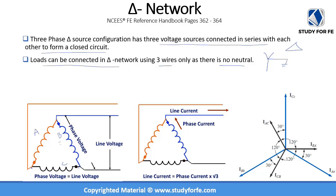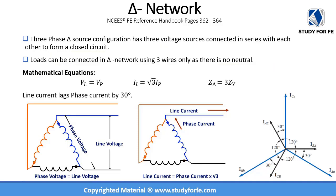The delta network has some distinct features compared to the Y-network because of its different connections. The most obvious equation is that in a delta network the line voltage equals the phase voltage — V_line equals V_phase — because the phase voltage appears across the same two nodes as the line voltage. Whether you connect a voltmeter across the phase or across the line, it gives you the same reading.